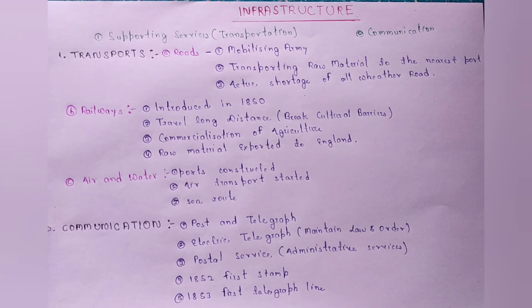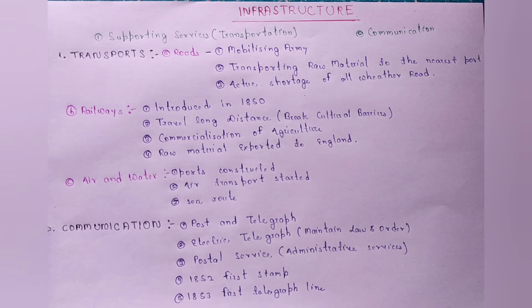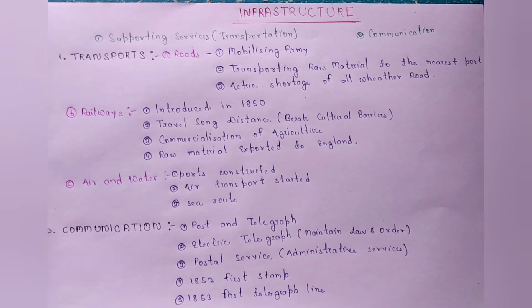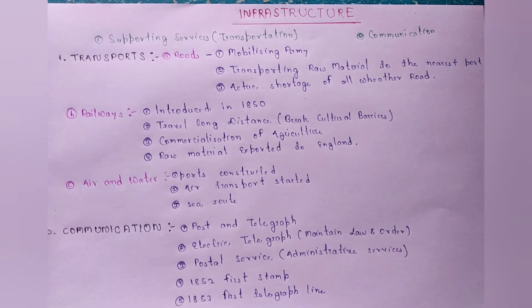Railways से क्या हुआ? जो culture barrier था — मतलब long distance की barriers — पहले लोग जहाँ थे वहीं रह जाते थे, लेकिन railways ने culture barriers को तोड़ने का काम किया। अब लोग दूसरी जगह जाकर trade कर पाते थे, export और import कर पाते थे — trade barriers को तोड़ने में काम किया। और third feature है railways का: commercialization of agriculture — agriculture को commercialize करने में railways का बहुत ही important role रहा।